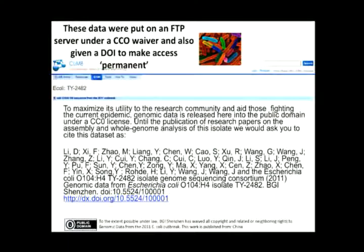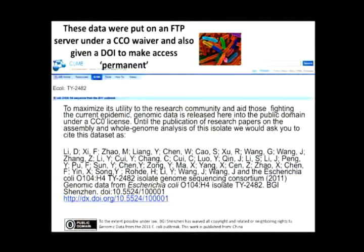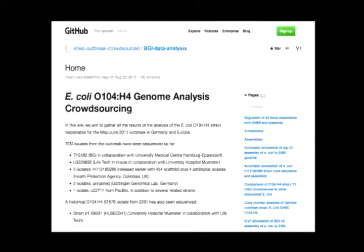What happened on the other side, where the data were released: they were put immediately into an FTP server and given a data DOI, which has the effect of making the data, no matter where that information is used, able to be followed and permanent. The data were also put out under a CC0 waiver, which meant anybody could use them. This turned into the first E. coli crowdsourcing — people are calling it a 'tweenome' — because as soon as this information was tweeted, there was immediate discussion on Twitter about what had happened, what we could do. People began creating assemblies, using different programs, comparing things. BGI continued to update the sequence and created a GitHub site for everybody to cross-work on. This was real-time science — action was happening rather than waiting for a publication.